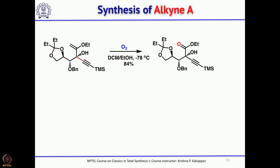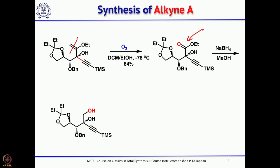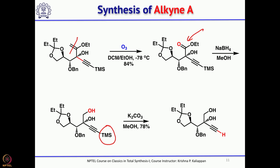The enol ether is ozonolyzed to give the ester, followed by reduction with sodium borohydride in methanol to fully reduce the ester to the corresponding alcohol. The TMS group on the alkyne is easily removed by treating with potassium carbonate in methanol. Then the primary alcohol is protected as a TBS ether and the secondary alcohol is in-situ protected as a TMS ether — TMS being more labile than TBS — giving intermediate A.